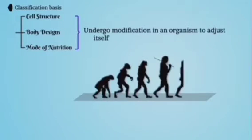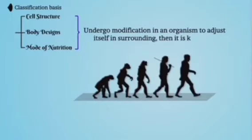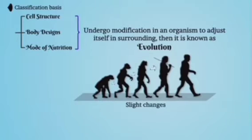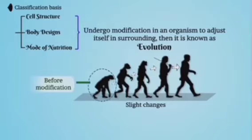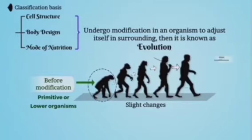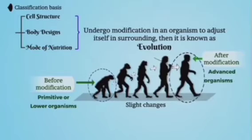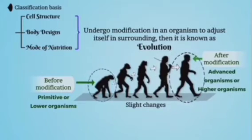Some animals have adaptations depending on their environment, which is also called evolution. Evolution occurs through slight changes before modification. Animals before modification are called primitive or lower organisms, and after modification they are called advanced organisms or higher organisms.